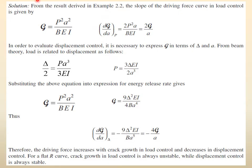From the previous example, G = P² a² / (B E I). We have to find dG/da. Under load control, P is constant, so P², B, E, I are all constants. Differentiating a² with respect to a gives 2a. So dG/da under load control is simply 2 P² a / (B E I). It is as simple as this.